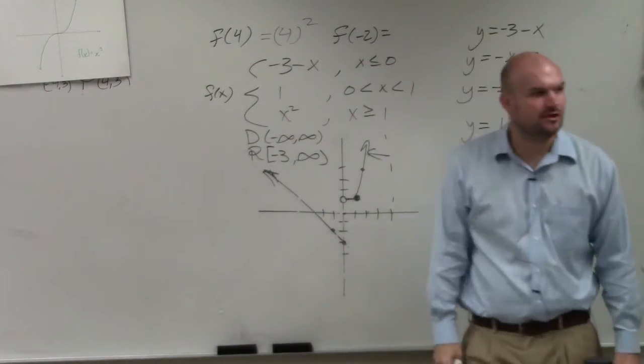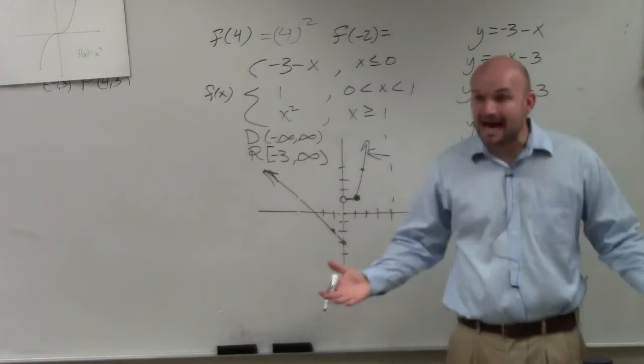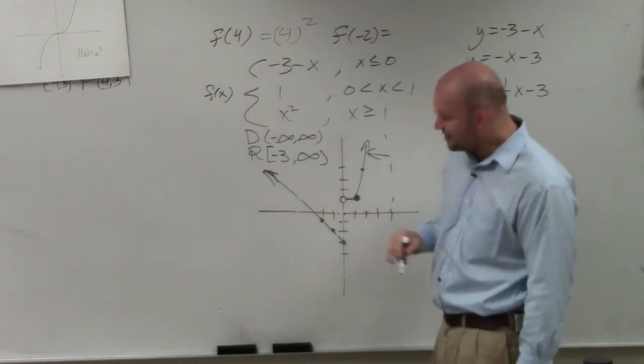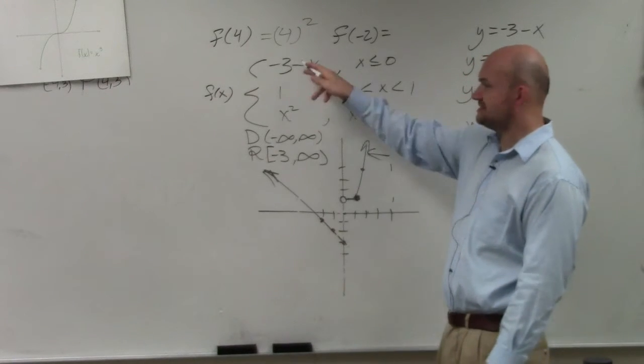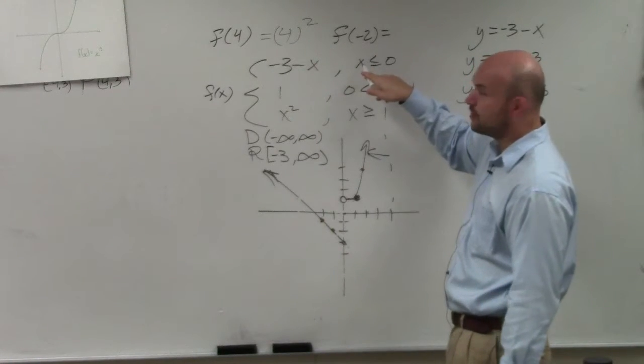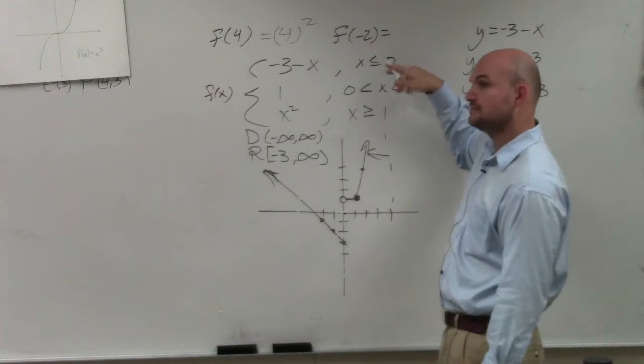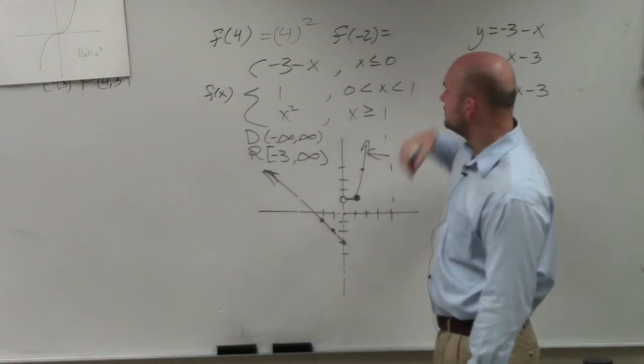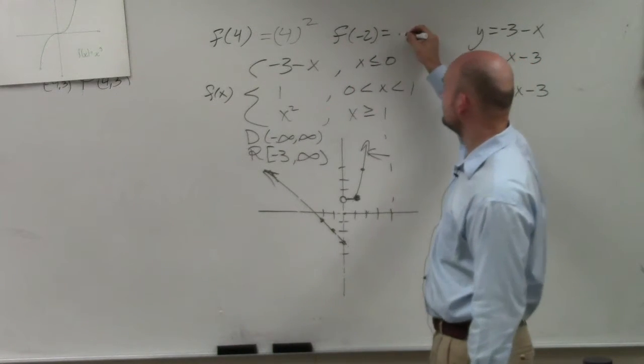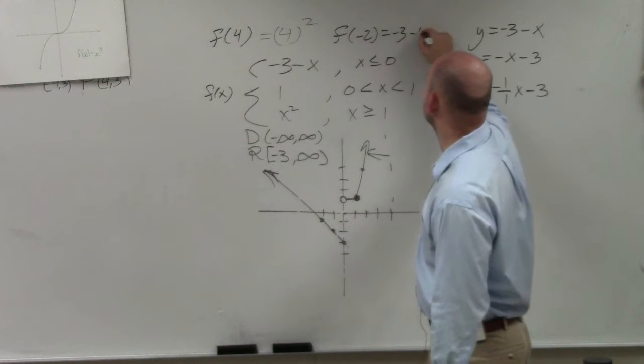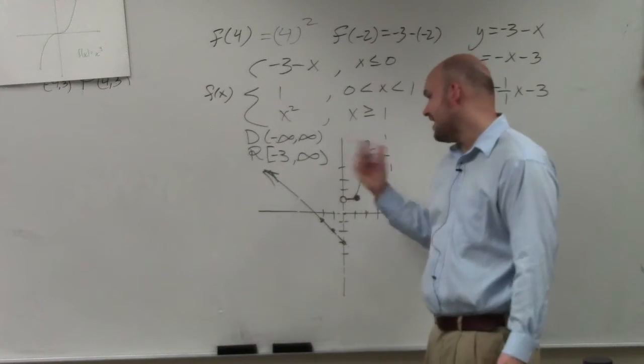What if I said, find f of negative 2? Top, middle, or bottom? Top. Because at negative 2, there's my function right there. Which function is that? It's that top one. Why? Because this is for all values that are less than negative 2. Right? Now, so that would be negative 3 minus negative 2.